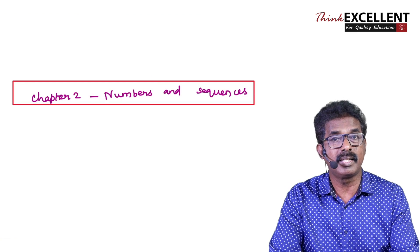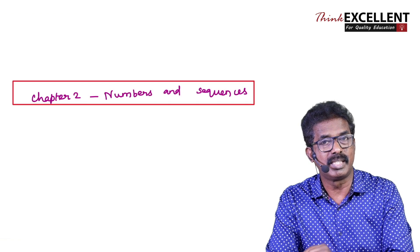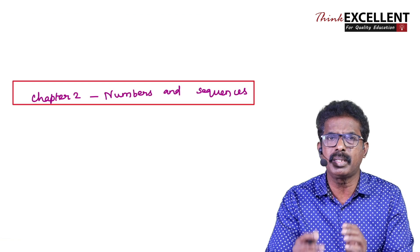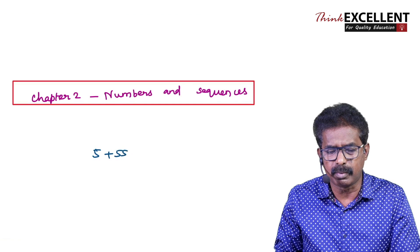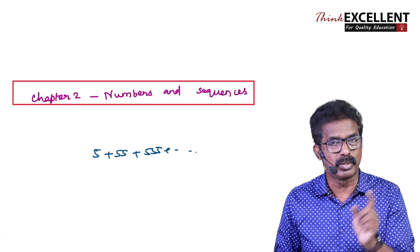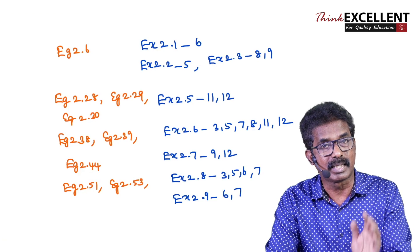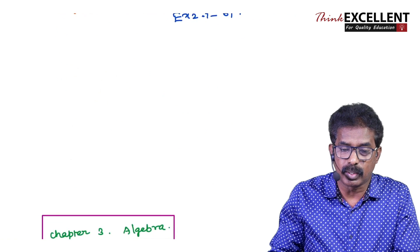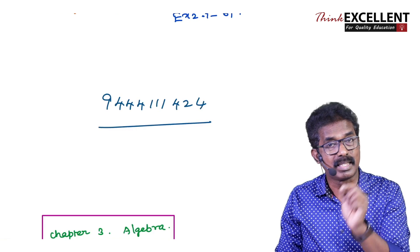Chapter 2 — Numbers and Sequences. Concentrate on finding HCF using Euclid's division algorithm. Then modular arithmetic — find the remainder — that is very important. Then AP and GP — three terms in AP and three terms in GP type questions. Then special series — sum of n natural numbers, squares of natural numbers, cubes of natural numbers. These are the important 5-mark areas. You can send your doubts to the WhatsApp number 9444114.